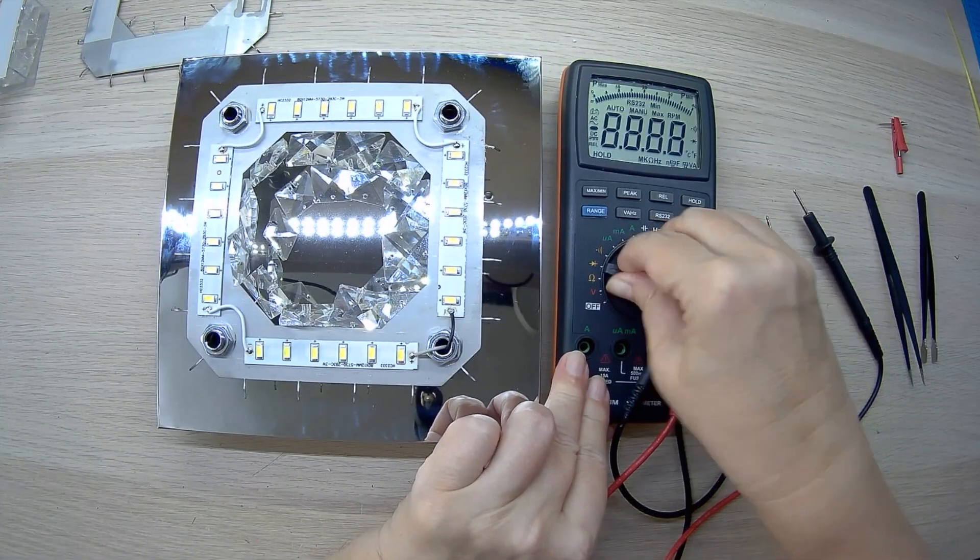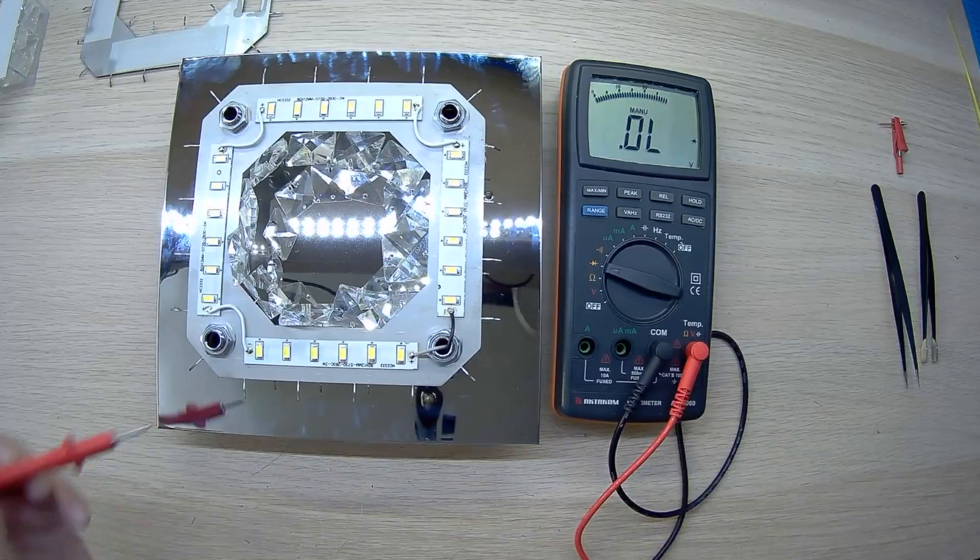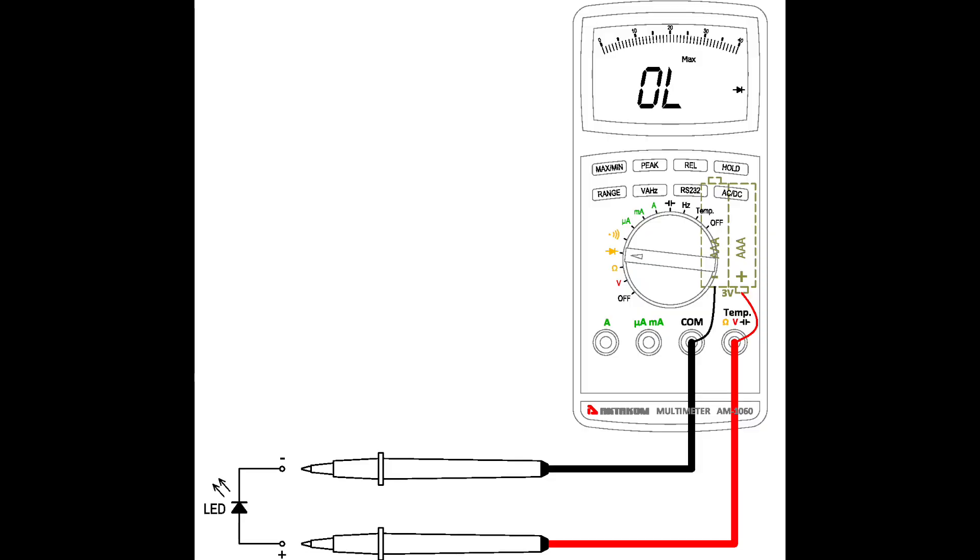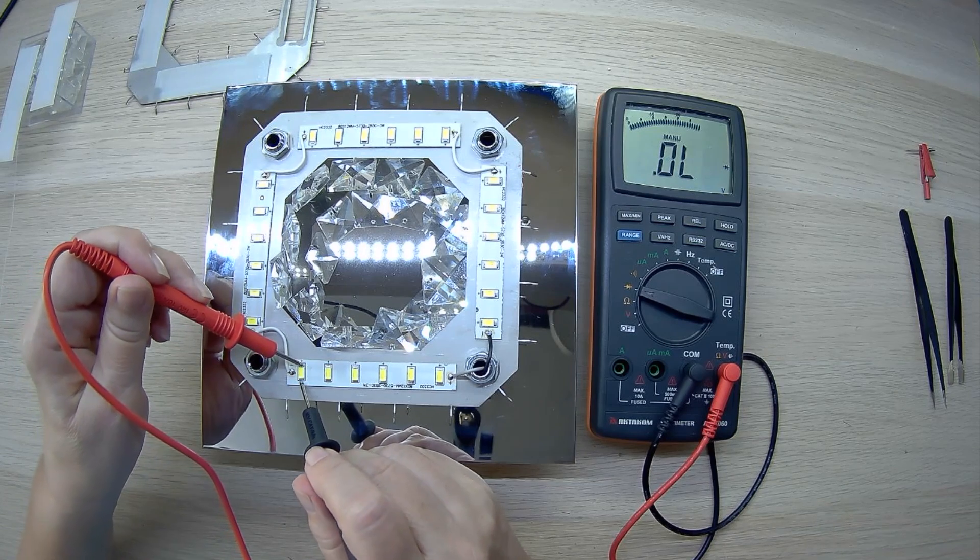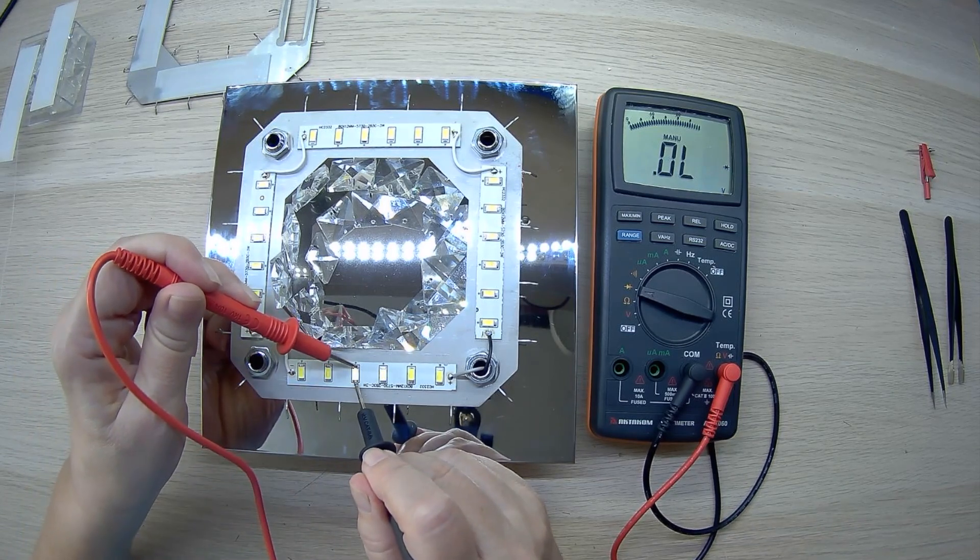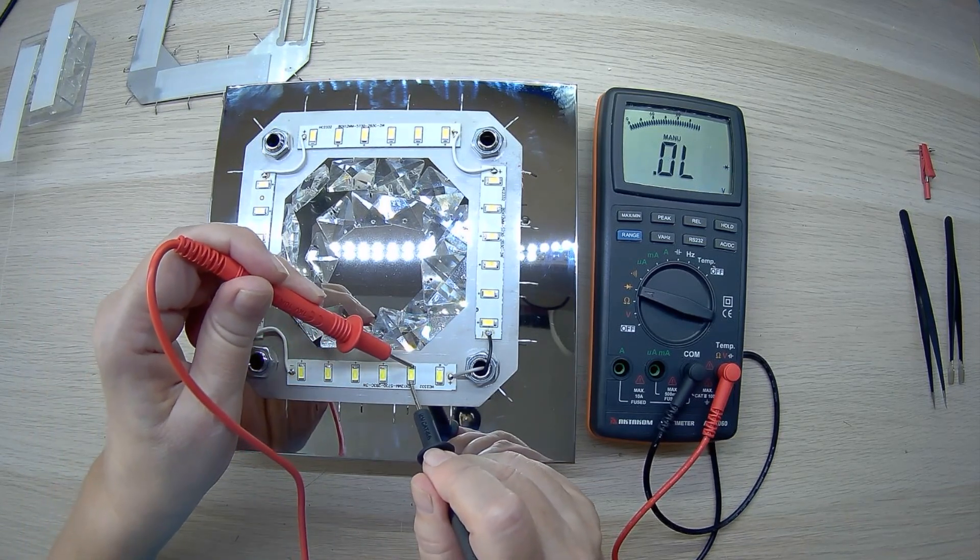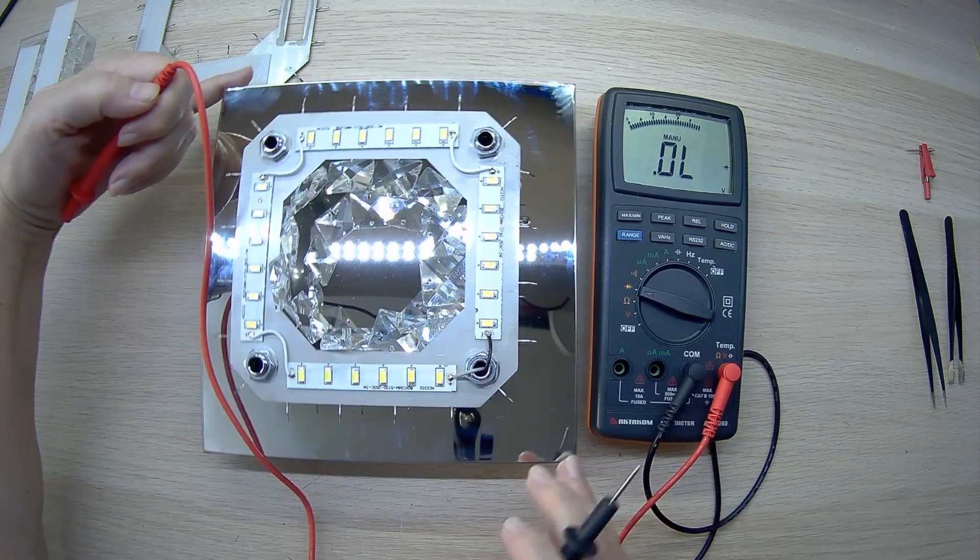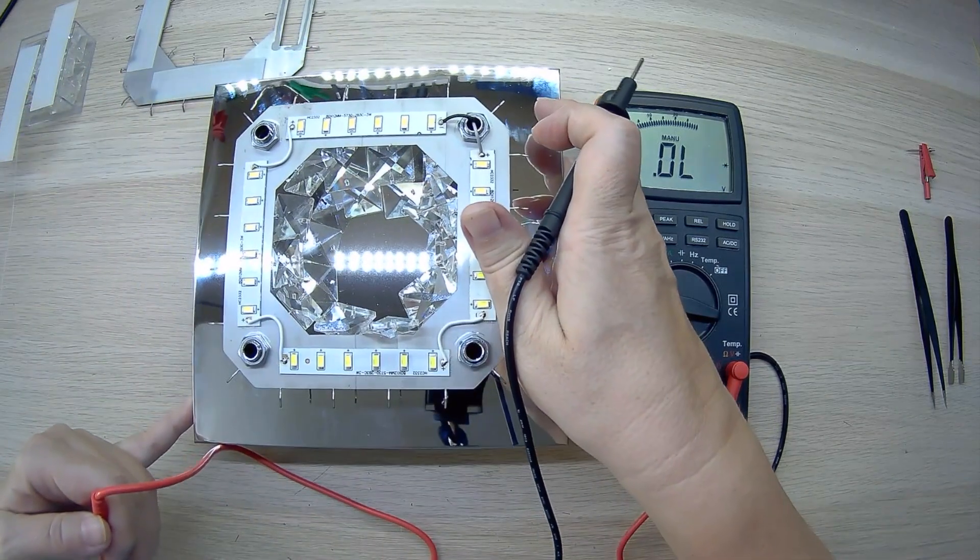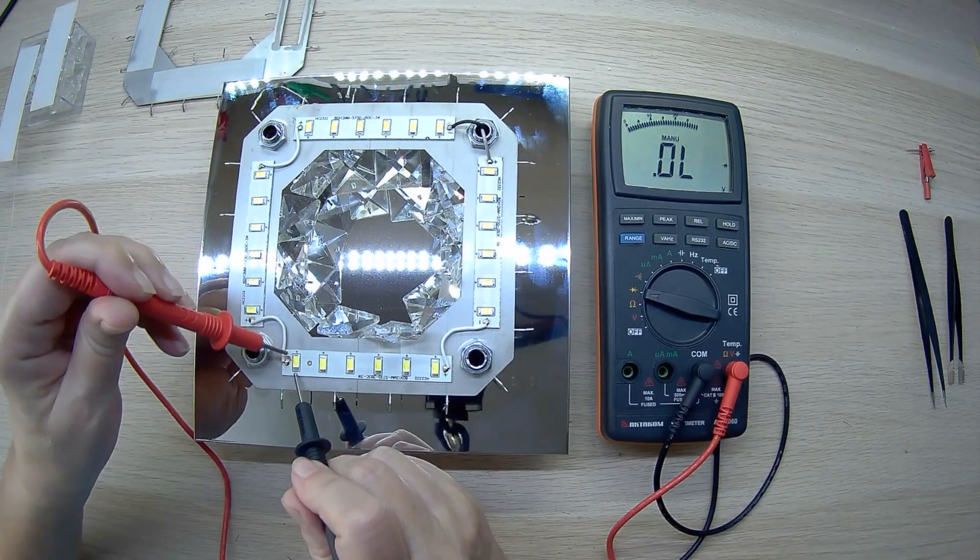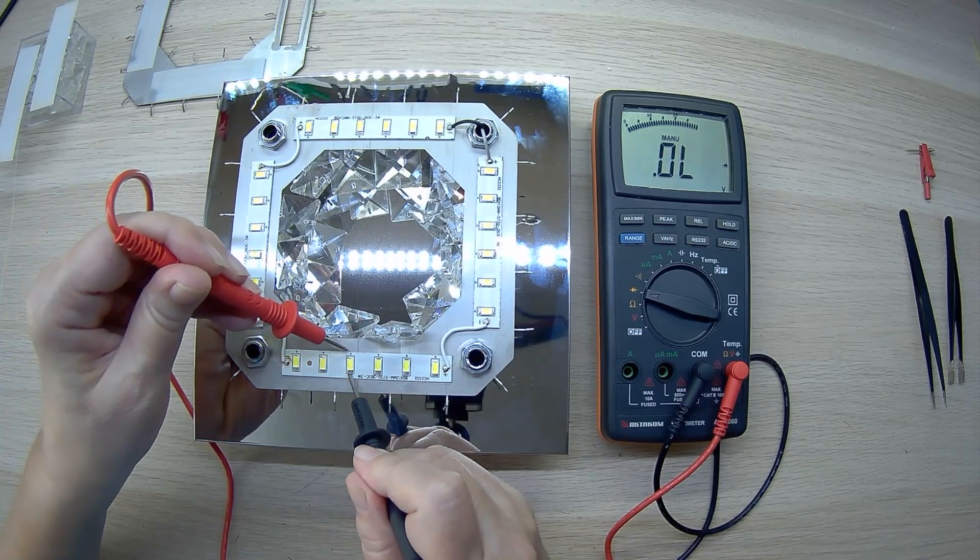The second stage of diagnostics begins with searching for faulty LEDs. To do this, we use the Octacom M1060 multimeter set to diode testing mode. In this mode, there are three volts on the multimeter probes due to the internal battery of the multimeter. The multimeter itself works like a regular voltmeter. This can be clearly seen in the connection diagram.